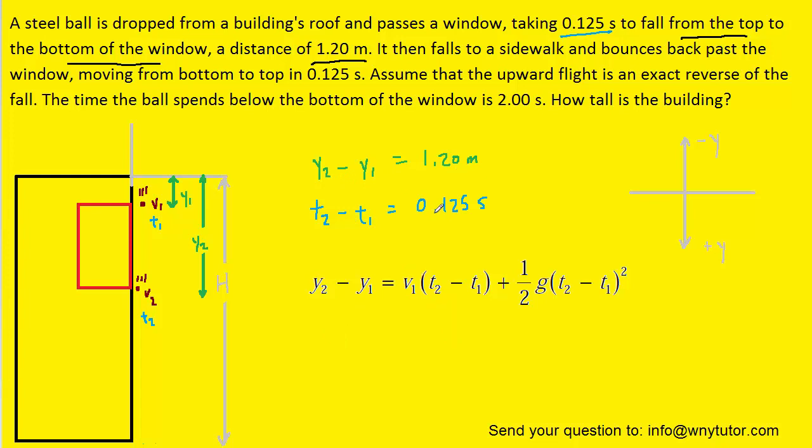So we can go ahead and plug in all the known values. Note that G will be positive 9.8 rather than negative 9.8, because we are calling the downward direction positive Y. And when you solve for V1, the initial velocity, you should get approximately 8.99 meters per second. If you have any questions about the algebra there, please let me know in the comments.